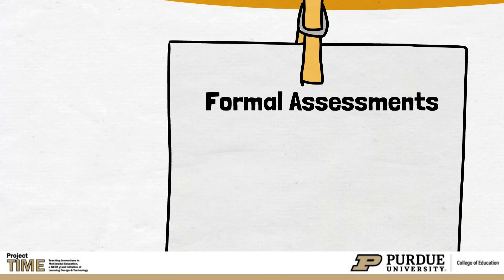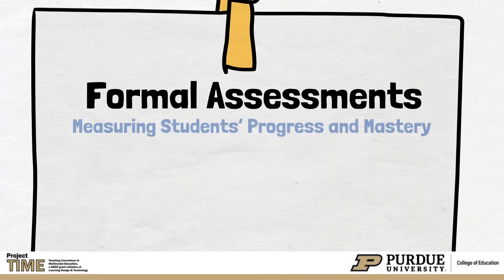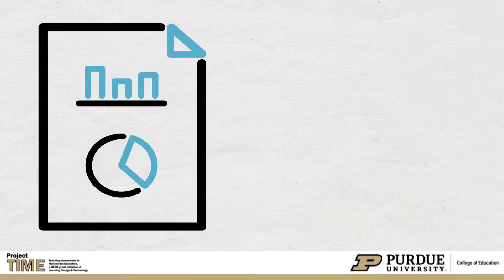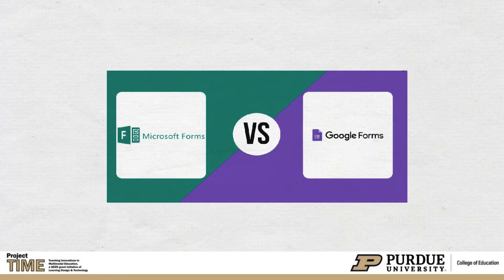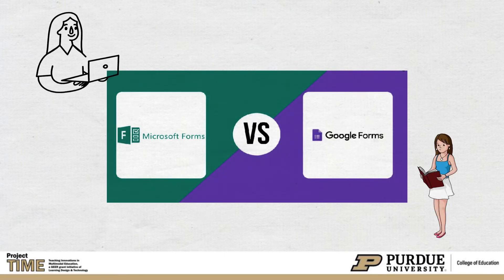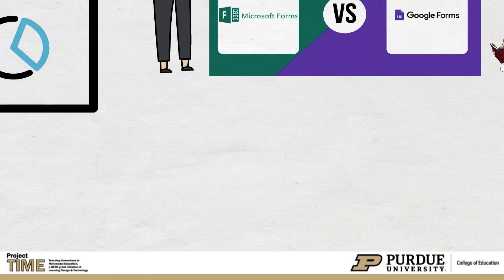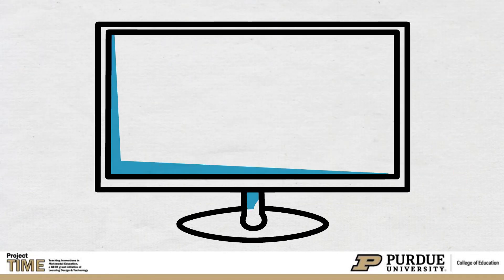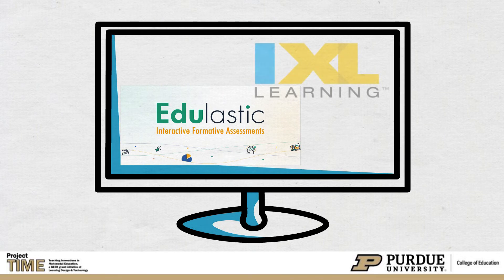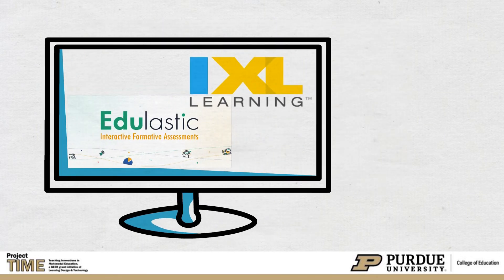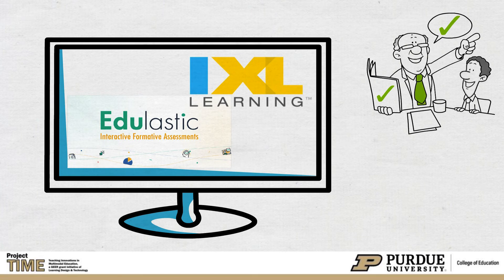Formal assessments might include measuring students' progress and mastery through various tools and apps, and using district, state, or national benchmarking tools. Google or Microsoft Forms can be used to collect students' responses on various types of questions to facilitate mastery-based assessments. District-determined assessment platforms like Edge Elastic and IXL are for evaluating students' progress and mastery and provide a wide range of assessment tools and samples to help teachers prepare their assessment items.